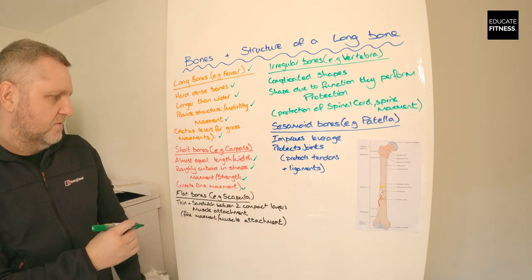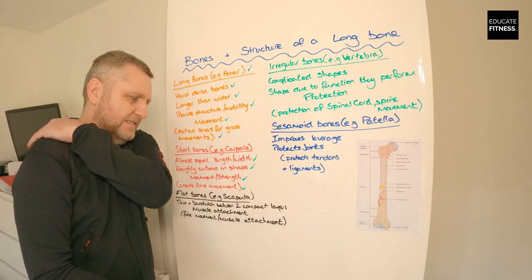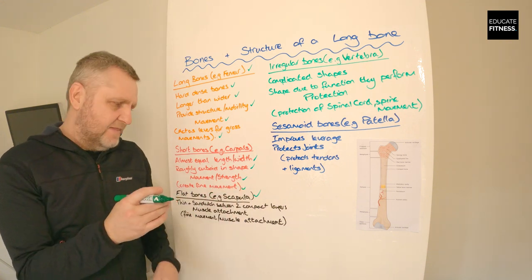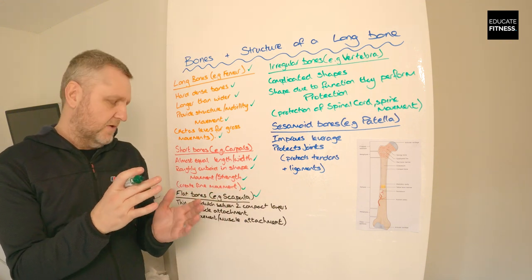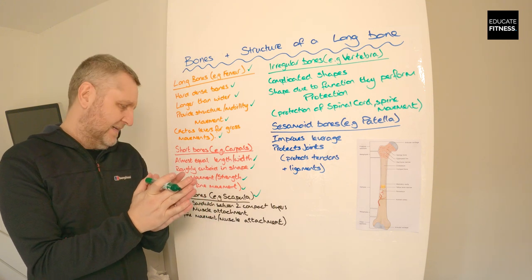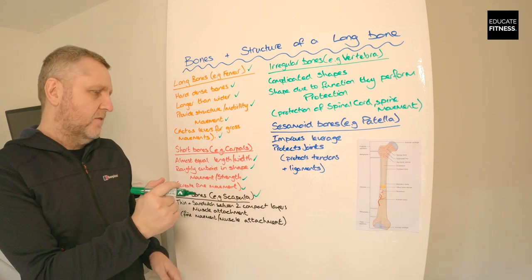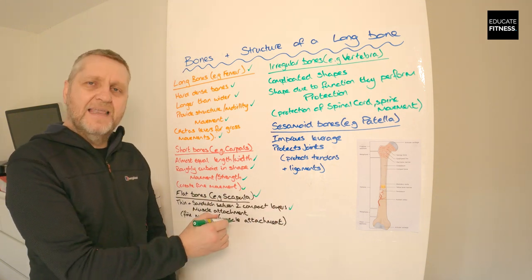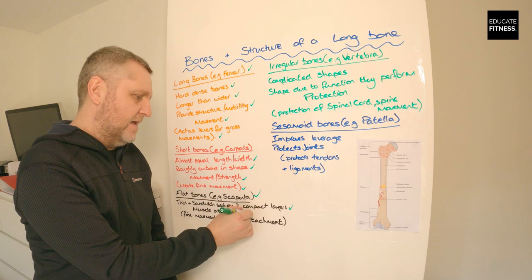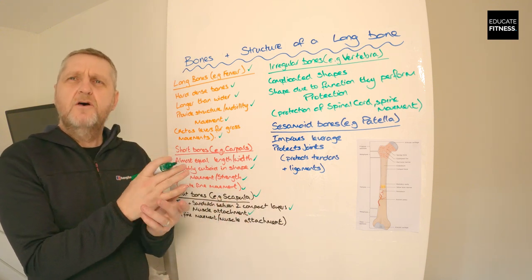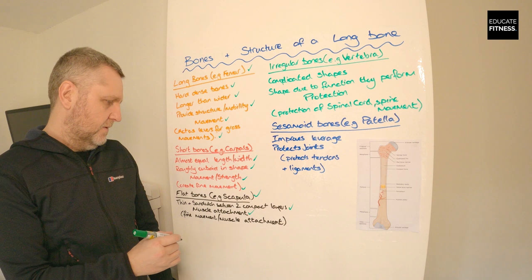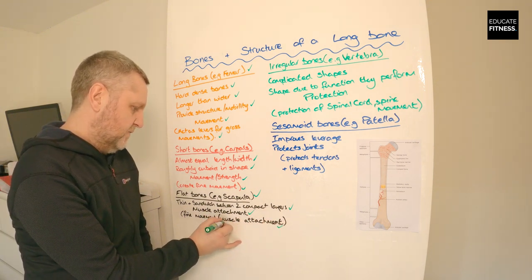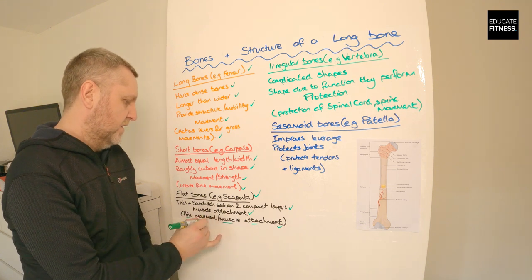Next we've got flat bones. A good example is the scapula. Flat bones are thin and they tend to be sandwiched between two compact layers. What are flat bones required for? Well, they allow muscle attachment — that's their main purpose. They provide a surface for muscle to attach to, and they also allow fine movement.